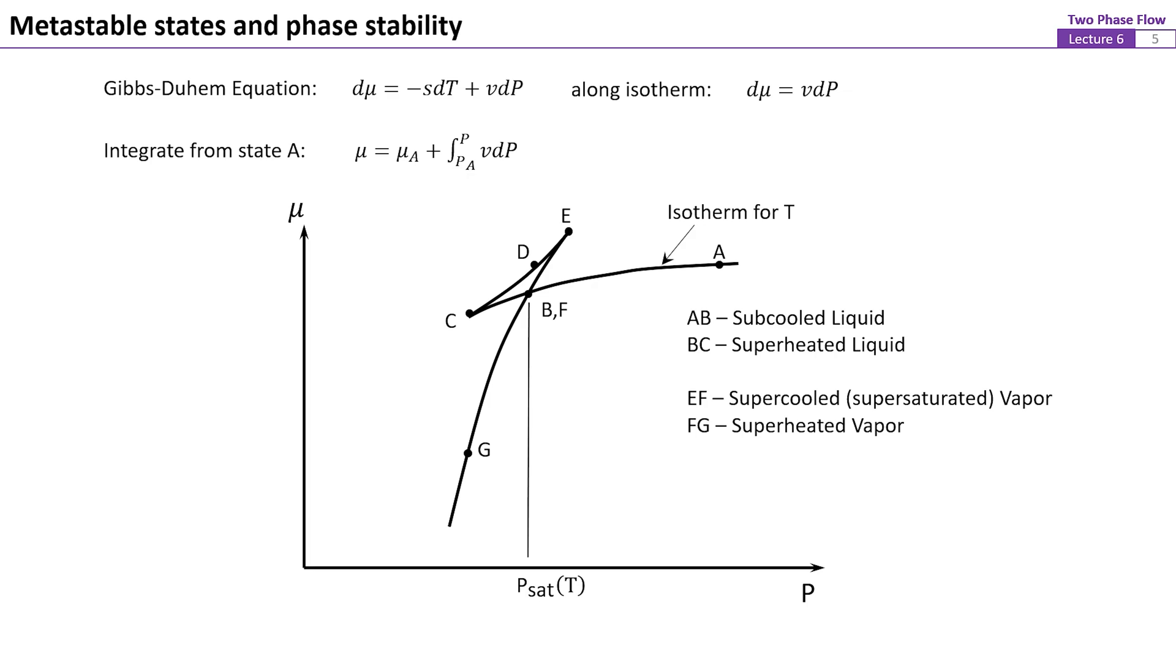It is worthwhile to point out that point B and F are actually coincided. This is expected since we have shown that for the liquid and vapor phases at equilibrium on a flat interface, the chemical potentials should be equal. Also note that the locations of C and E denote the limits of superheated liquid and supercooled vapor respectively. Point A is in the subcooled liquid region and point G is in the superheated vapor region.